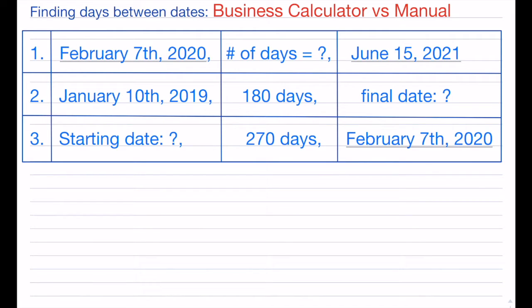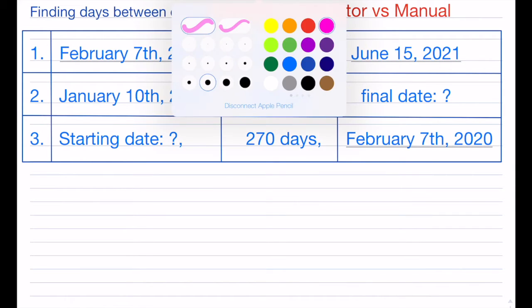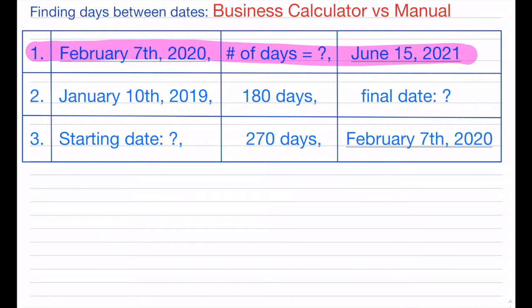There are three examples. The first has a starting date and a finishing date. The second gives you a starting date and a number of days, but you don't know the final date. The third is where you don't know the starting date — only the ending date — such as today, and you need to find what date was 270 days ago. You can do all of this on a business analyst calculator.